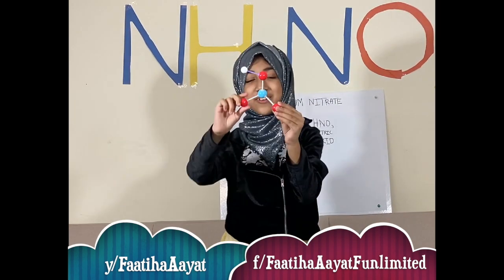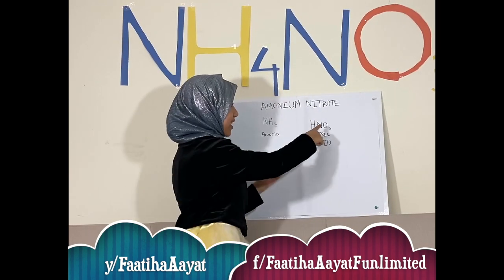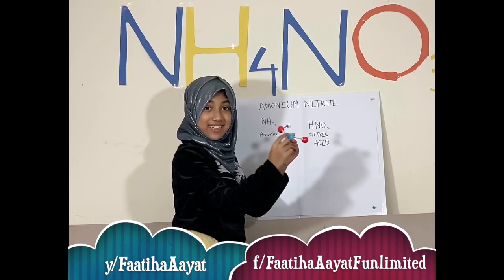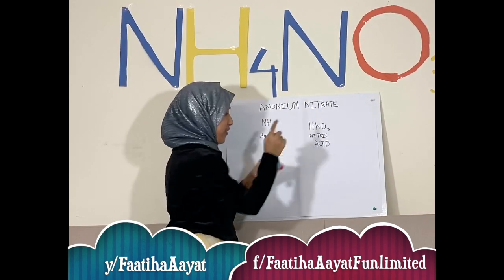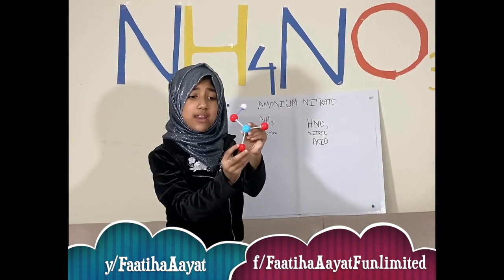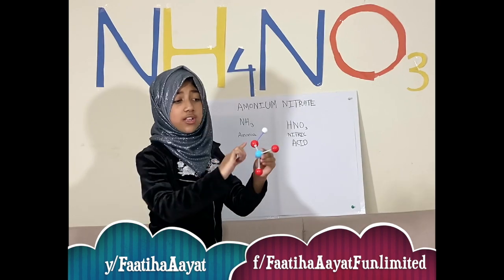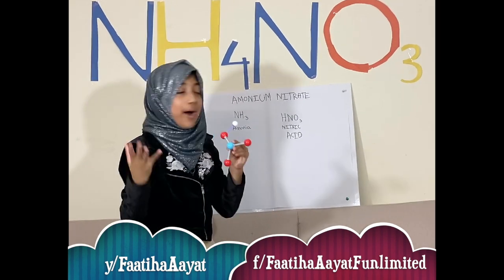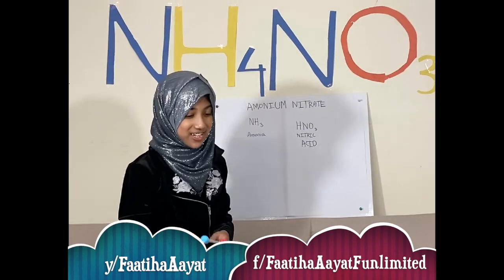As you can see, this is the real life model. The blue one stands for nitrogen — one atom of nitrogen. The white one stands for hydrogen — one atom of hydrogen, as you can see right here. And these red atoms stand for oxygen. As you can see, there are three of them here, because there are three atoms of oxygen.